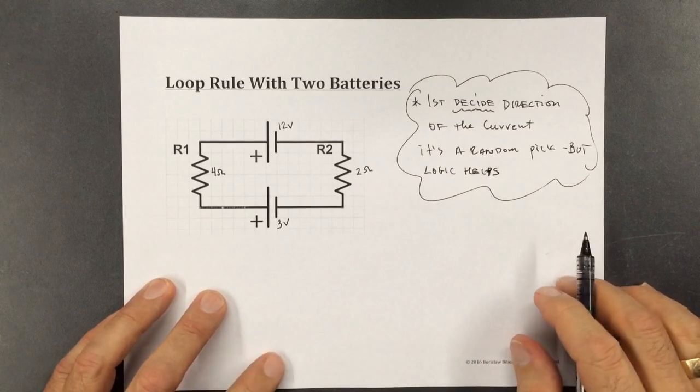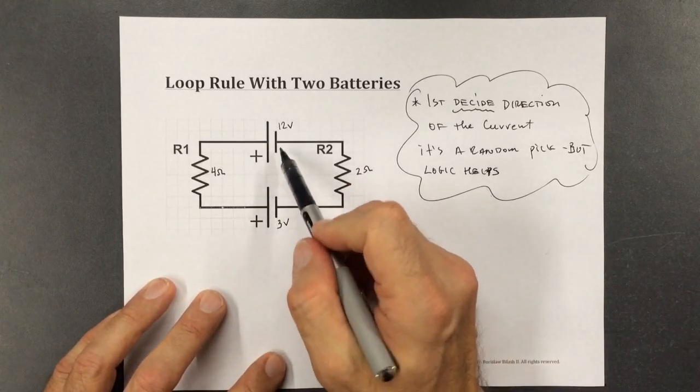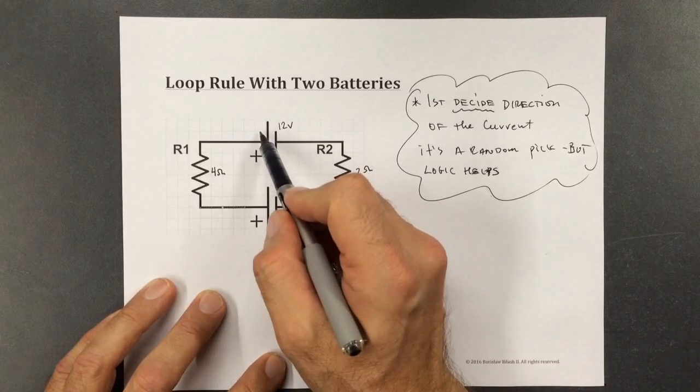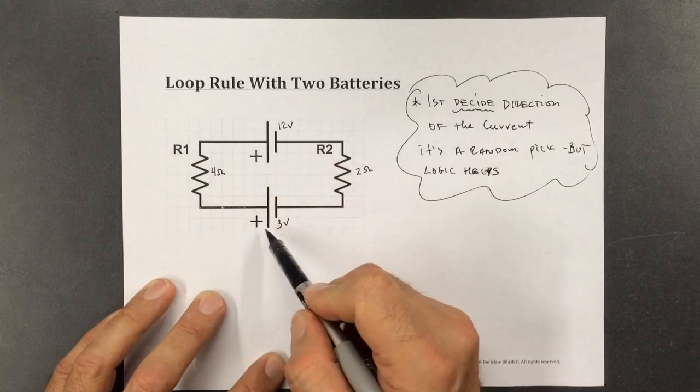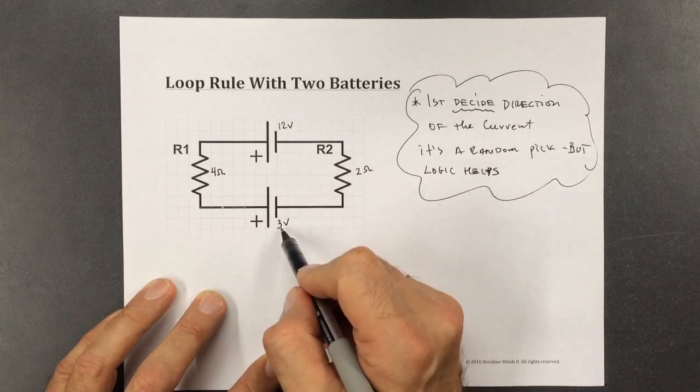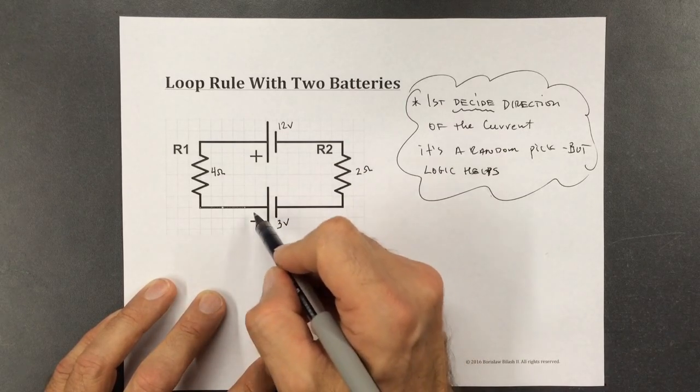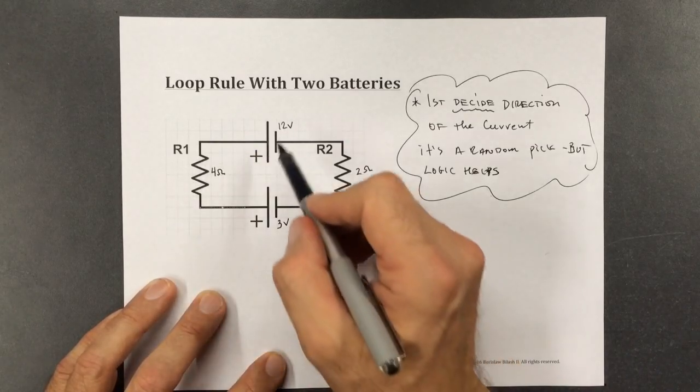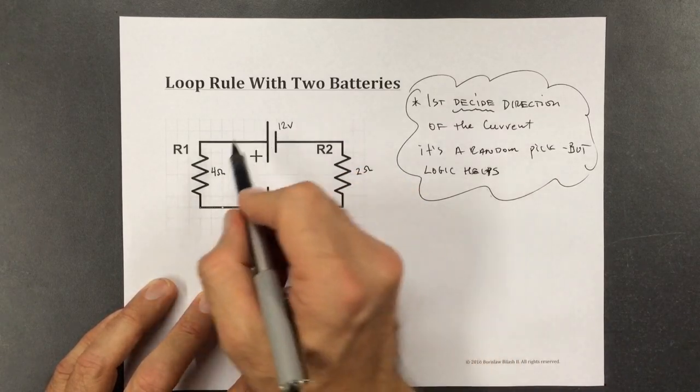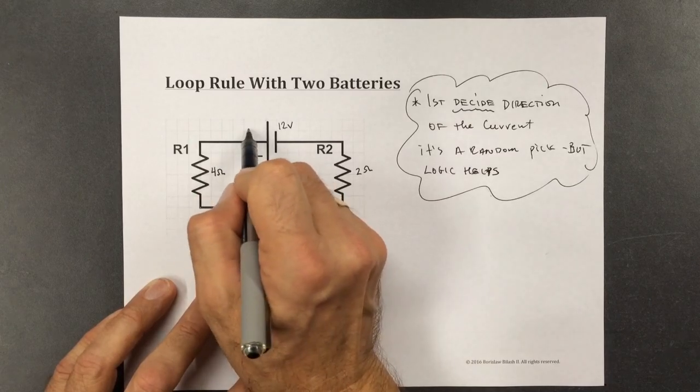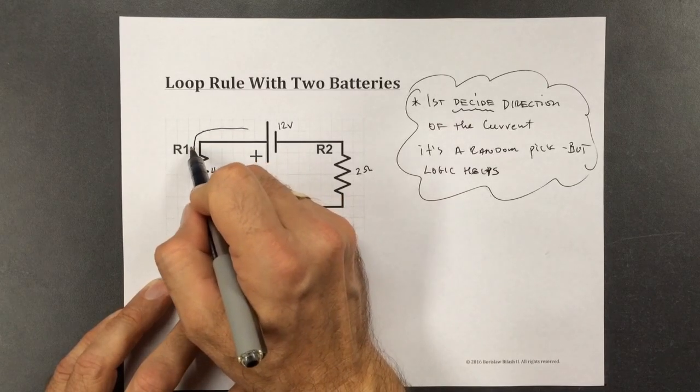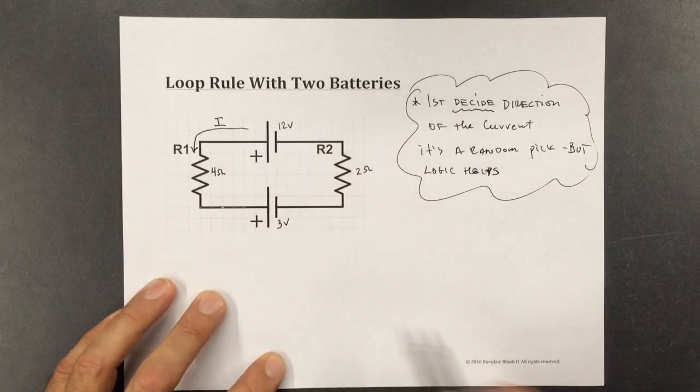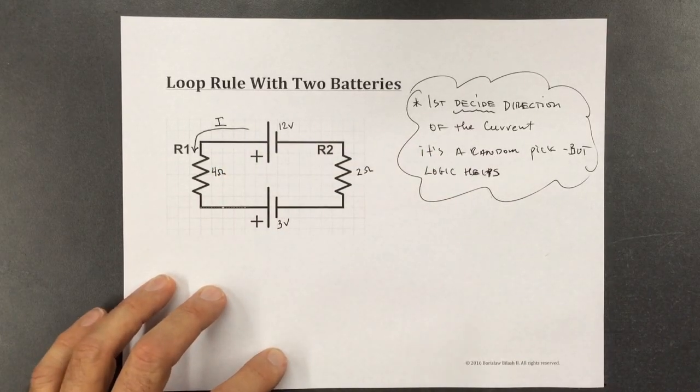Okay, so what I'm going to do is I'm going to look at the fact that I have two batteries here. I have this 12 volt pushing a current counterclockwise and I have a 3 volt battery pushing the current clockwise. So I think that this is going to win the tug of war. So I am going to decide to make the current like this. That's a decision. So that's the current in this loop. The current can only move in one direction in a loop.